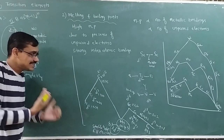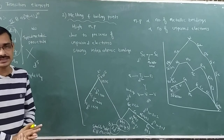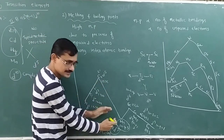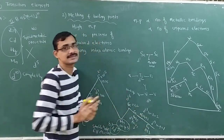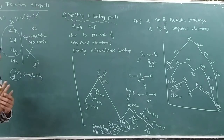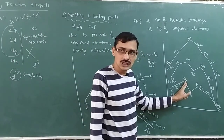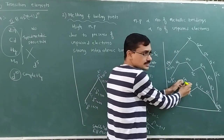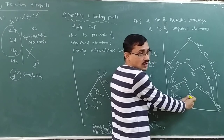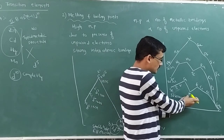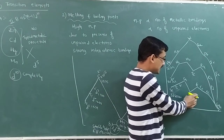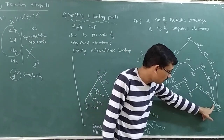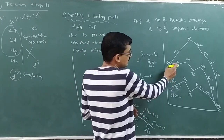In any series of transitional elements, going left to right, the melting point first increases, reaches a maximum, then decreases, then increases again, and then decreases again. In the 3D series: scandium to chromium — increasing; chromium to manganese — decreasing (half-filled D5 stable); manganese to iron — increasing again; then iron to copper — decreasing. The same pattern is observed in the 4D series: zirconium to molybdenum increasing, then technetium (half-filled) causes a dip, then increasing again toward ruthenium, then decreasing.